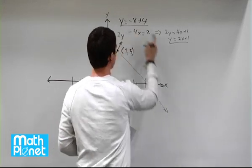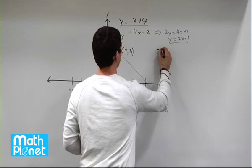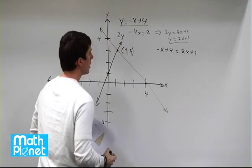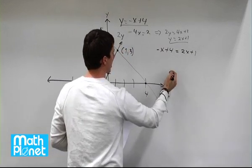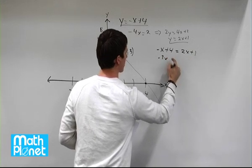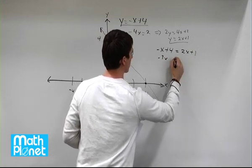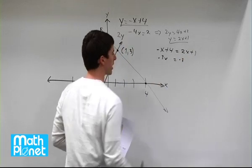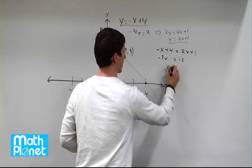All right, so if we set these two y's equal to each other, we have negative x plus 4 equals 2x plus 1. So if we put all the x's on the same side, we have negative 3x, and then we put all the numbers on the same side, we have 4 equals 1 minus 4, which is negative 3. Divide both sides by negative 3 gives us x equals 1.